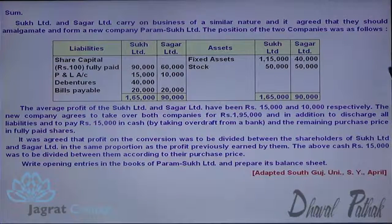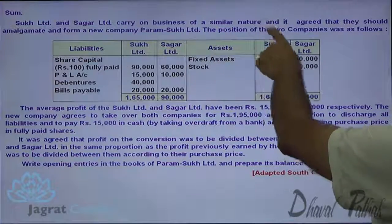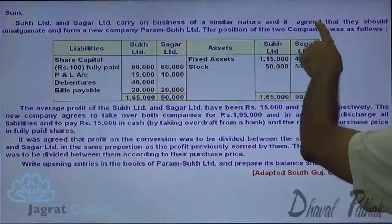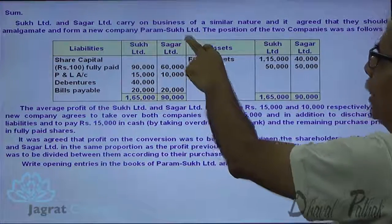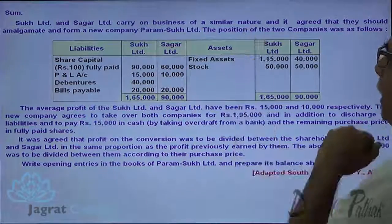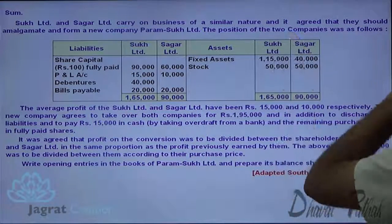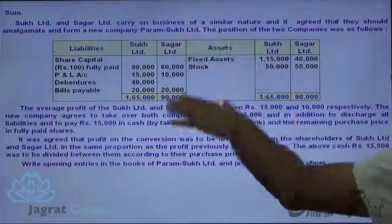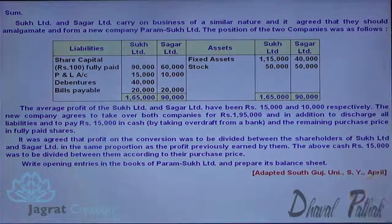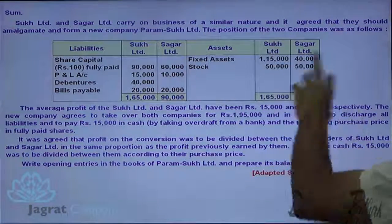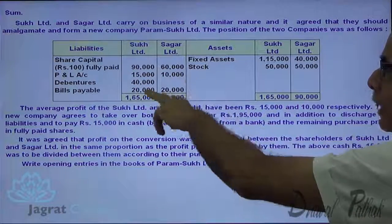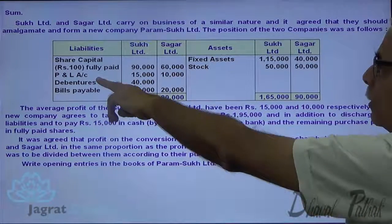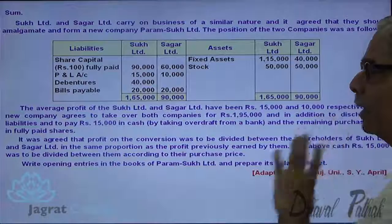Souk Limited and Sagar Limited carry on business of a similar nature and it was agreed that they should amalgamate and form a new company, Param Souk Limited. The position of the two companies is given, including details of fixed assets, stock, share capital of Rs. 100 each, profit and loss account, debentures, and bills payable.